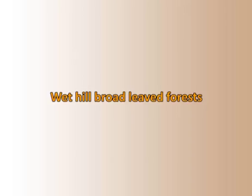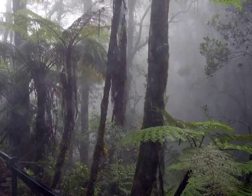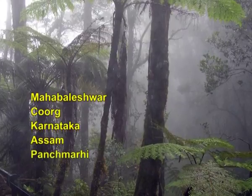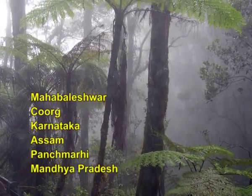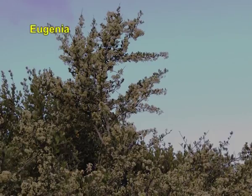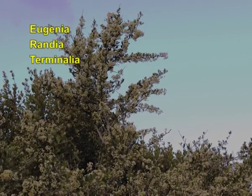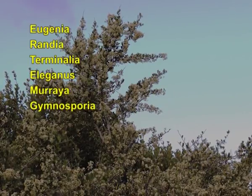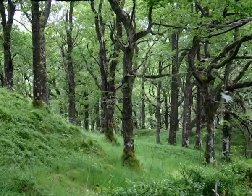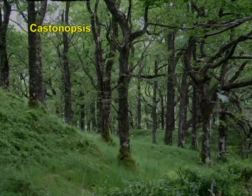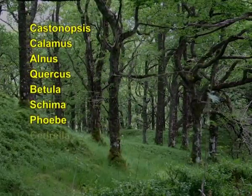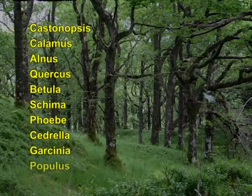Wet hill broadleaved forests are found in Mahabaleshwar, Coorg, Karnataka, parts of Assam, Pachmarhi, and other parts of Madhya Pradesh. Important plants in the wet hill forests of the south include species of Eugenia, Randia, Terminalia, Elaeagnus, Murraya, Gymnosporea, Flemingia, Ficus, Tyrocarpus, and Lantana. In the north, common species include Castanopsis, Calamus, Alnus, Quercus, Betula, Chimonanthus, Phoebe, Cedrela, Garcinia, and Populus.